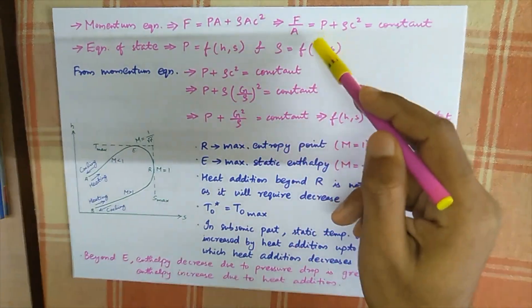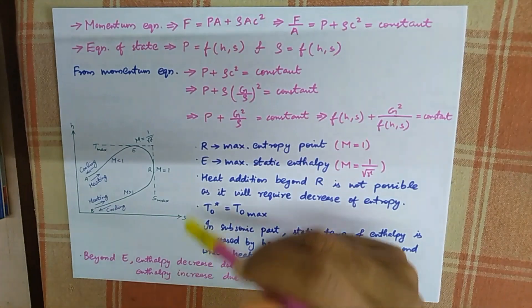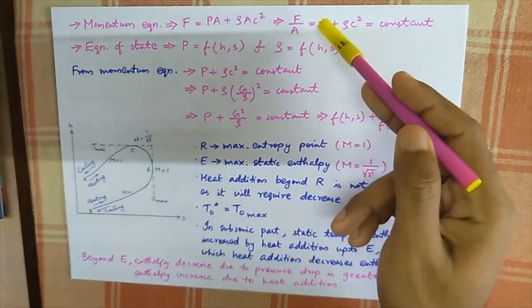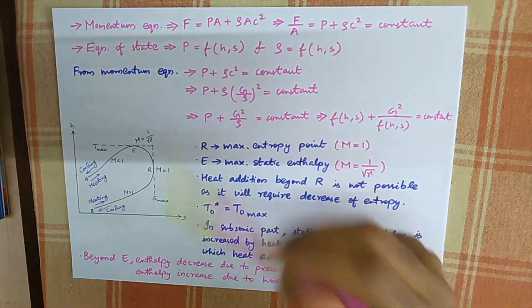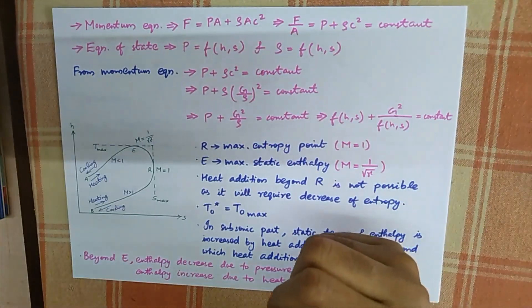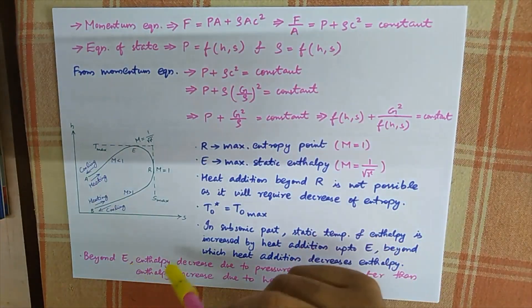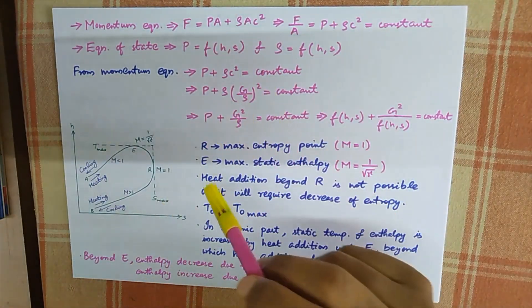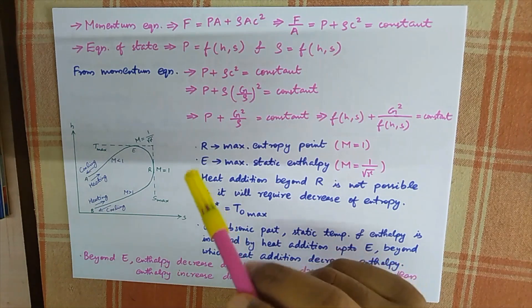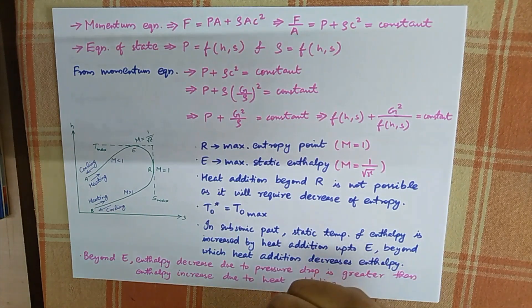So these three equations — the continuity equation, momentum equation, and equation of state — are the governing equations for Rayleigh Flow.